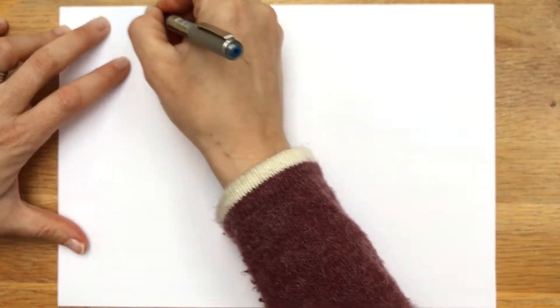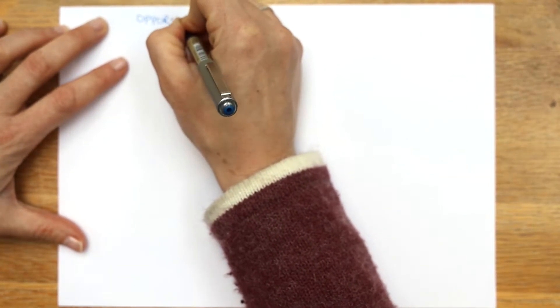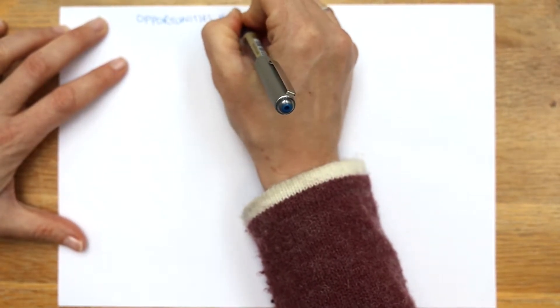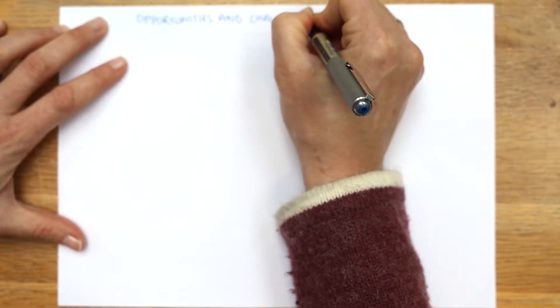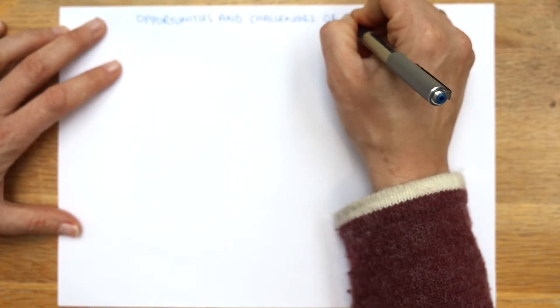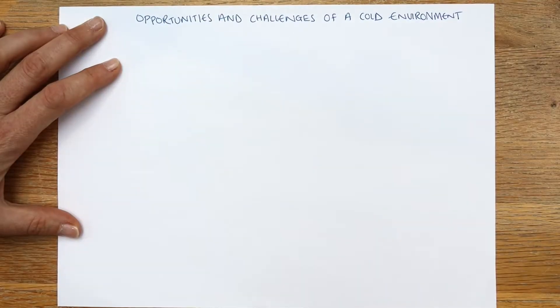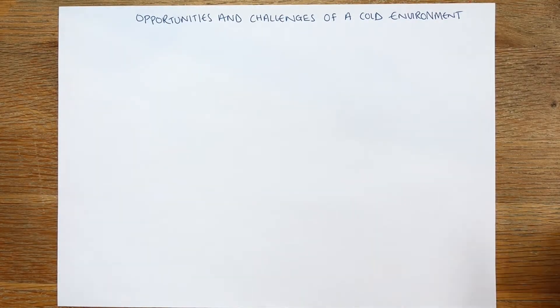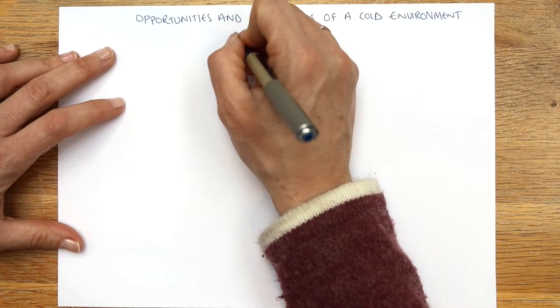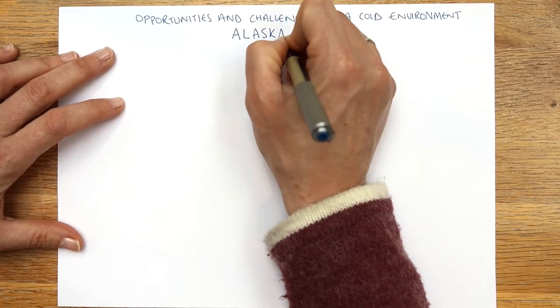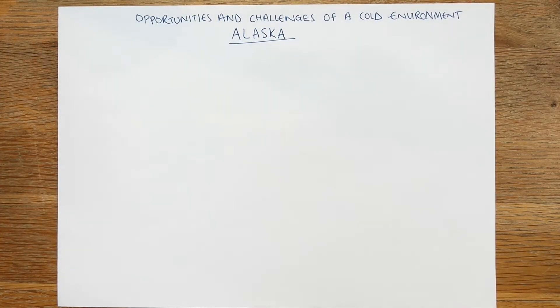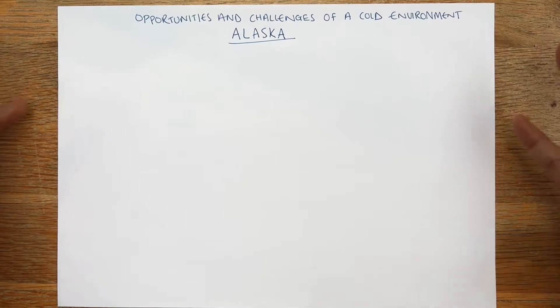Today we're going to look at Alaska as our case study for a cold environment. AQA requires you to know both opportunities and challenges of a cold environment. This is the section of the paper where you choose between a cold environment or hot deserts. I teach both Svalbard in the Arctic Circle and Alaska. You can see my Svalbard video separately on the channel, but this one is focusing on Alaska.